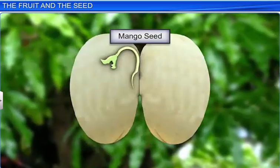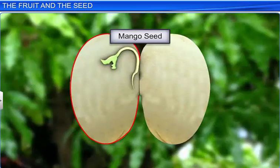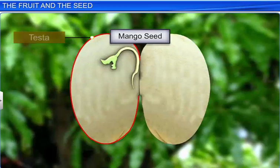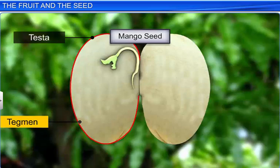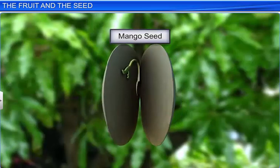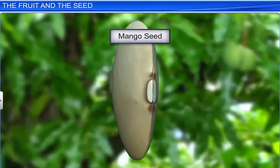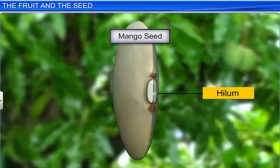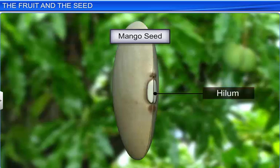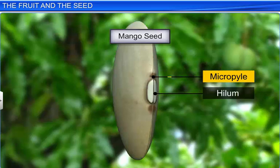In a dicotyledonous seed, the outermost covering is the seed coat and is made up of two layers: the outer testa and the inner tegmen. The seed coat also has a scar on its surface called the hilum, which helps attach the seed to the fruit. Above the hilum is the micropyle, a small pore in the outer coat of the seed through which the pollen tube enters an ovule.